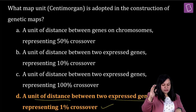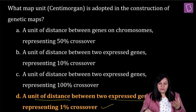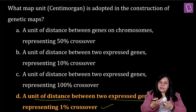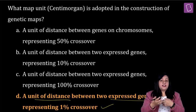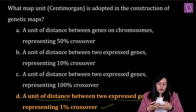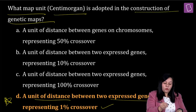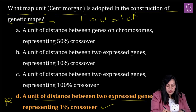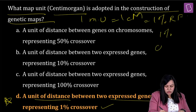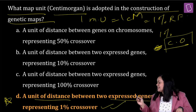When we talk about what map unit or centimorgan is adopted in the construction of genetic maps, the answer is one map unit or one centimorgan, which is nothing but 1% recombination frequency, exactly represented by 1% crossover (CO). That is given in option D, and that is why option D is the right answer to this question.